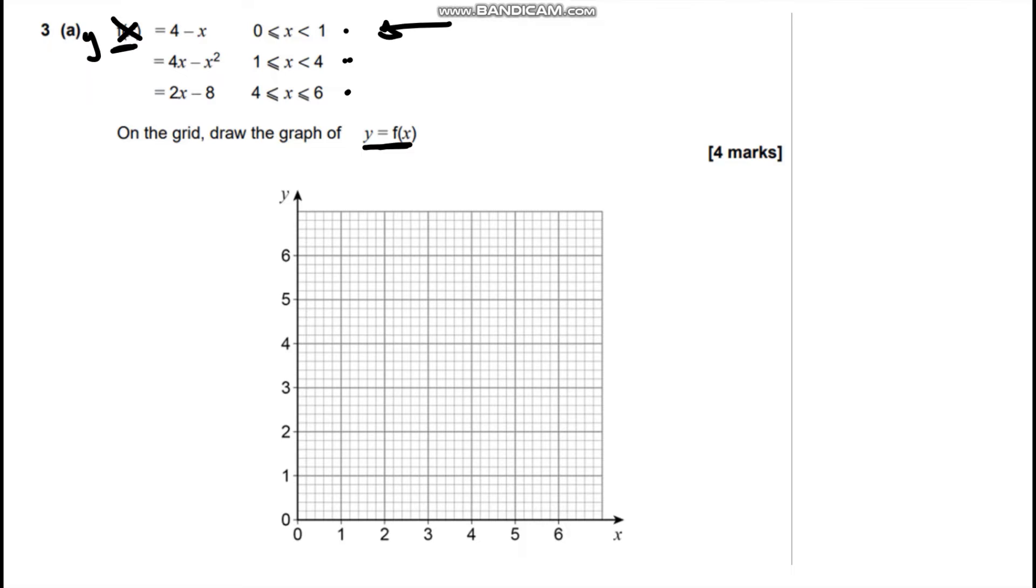So at 0, where does this graph happen to be? If we put in x equals 0 we're going to end up with 4 take away 0 which is 4, so we're going to have that point there. At x equals 1 we're going to have 4 take away 1 which is 3, so it's going to be that point there. And we know it's a straight line graph so we can join it up with a straight line.